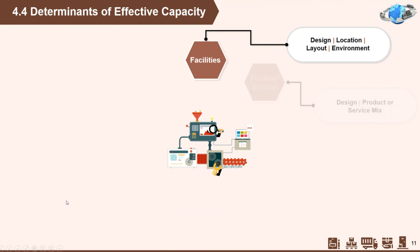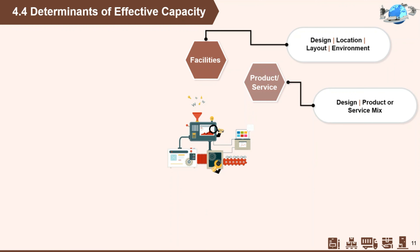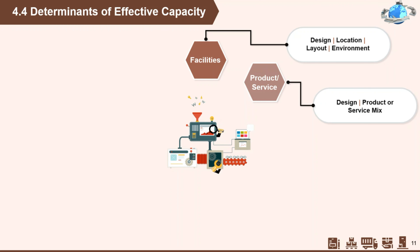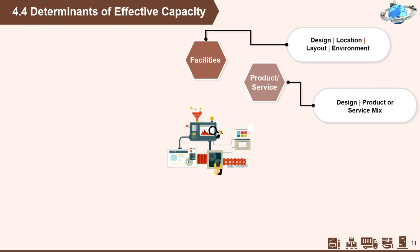Next, product and service factors. Product or service design can have tremendous influence on capacity. For example, when items are similar, the ability of the system to produce those items is generally much greater than when successive items differ. A perfect example is a restaurant that offers a limited menu — it can usually prepare and serve meals at a faster rate than a restaurant with an extensive menu.